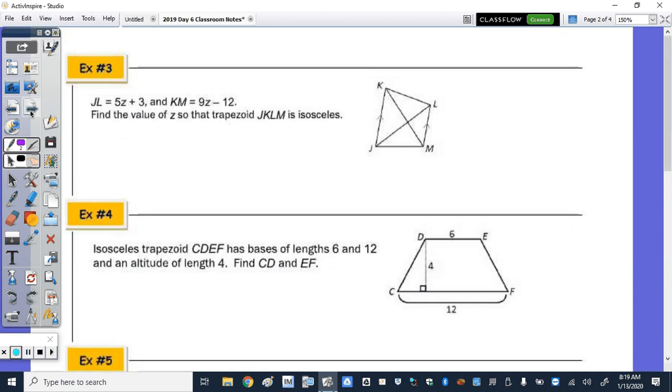Number three. So the length of JL, in the problem this is a diagonal of this trapezoid, and KM is also a diagonal. Find the value of Z so that the trapezoid is isosceles. Well, if it's isosceles, then the diagonals are congruent. So 5Z plus 3 equals 9Z minus 12.